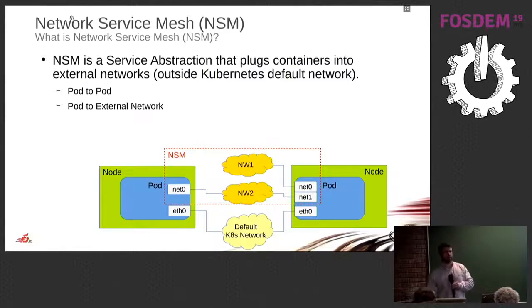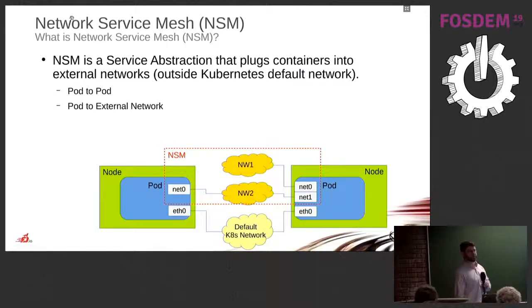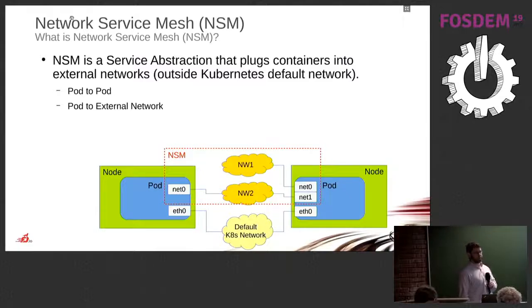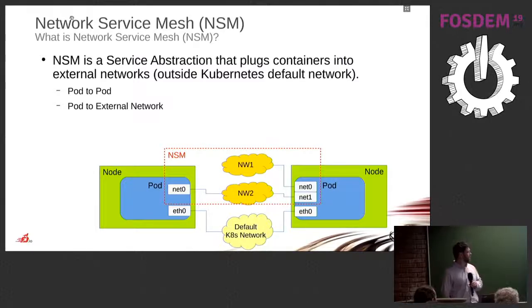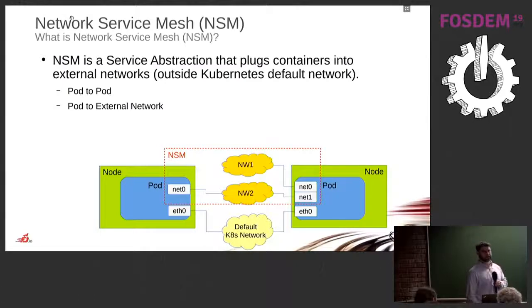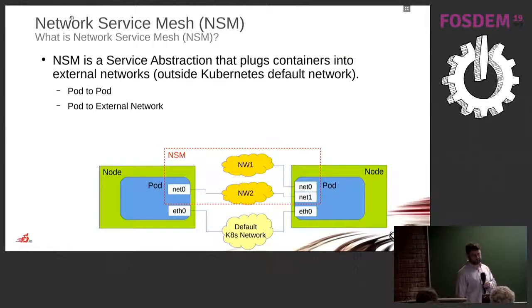A little bit on Network Service Mesh. I have to admit I do not work on Network Service Mesh — a colleague was going to present this portion but cannot attend, so I'll do my best. One key concept is that it is data plane agnostic — it can work with multiple data planes. However, probably one of the first data planes we will use is VPP because of all the features it has. Another thing about Network Service Mesh is it has a strong play in running containers and Kubernetes, but Kubernetes is not required. You can run service mesh without Kubernetes if you wanted to.